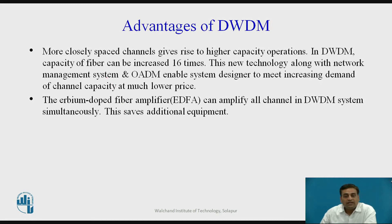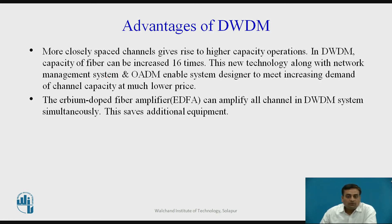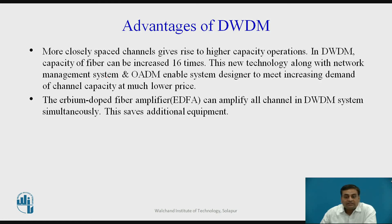The advantages of dense WDM over typical WDM include: more closely spaced channels enabling higher capacity operations, with fiber capacity increasable up to 16-fold. Dense WDM, combined with network management systems and optical add-drop multiplexers, enables system designers to meet increasing channel capacity demands at much lower cost. Additionally, erbium-doped fiber amplifiers can amplify all channels in a dense WDM system simultaneously, saving additional equipment and cost.